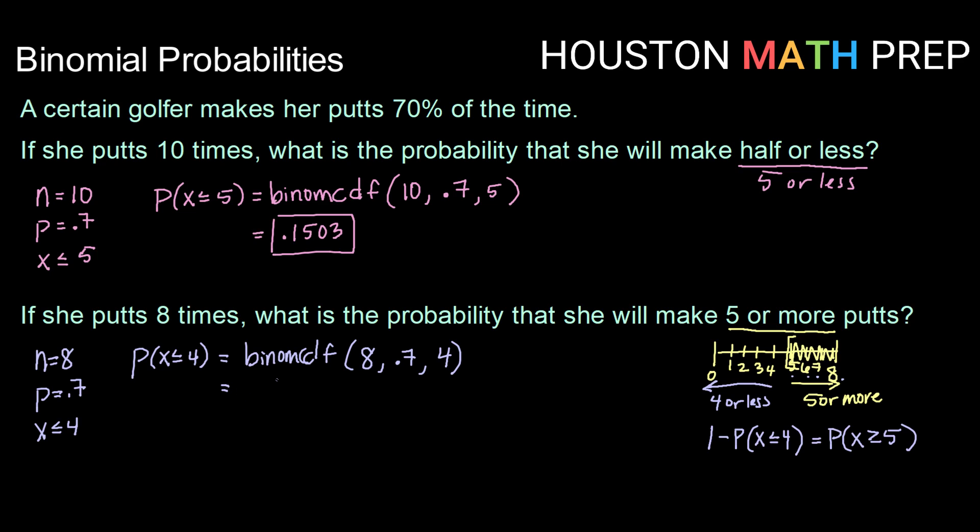Okay, and let's see what that will be. We have 8 trials. Okay, so that is 0.1941.